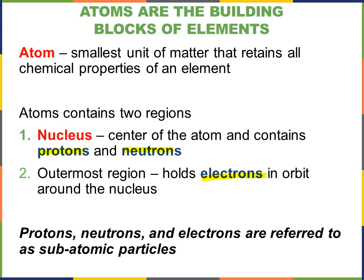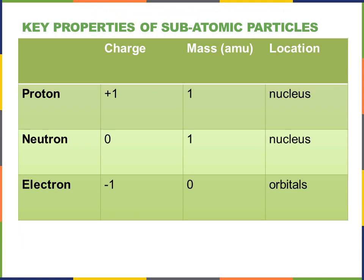Elements are also referred to as atoms. Every atom has a specific shape and a specific composition — a mixture of protons, neutrons, and electrons. A balanced atom has an equal number of protons and electrons: protons have a positive charge of +1, electrons have a charge of -1. As long as they're in balance, the atom is uncharged — a balanced atom is a happy atom.